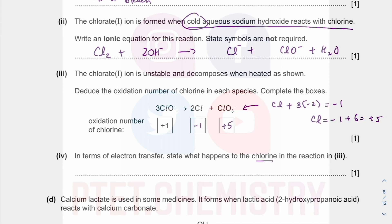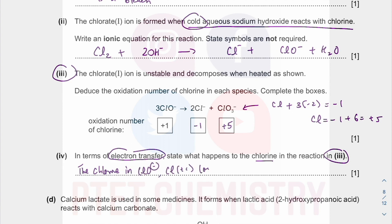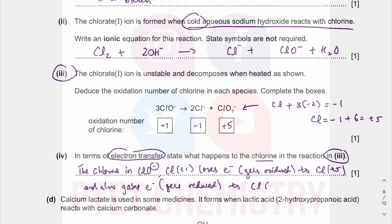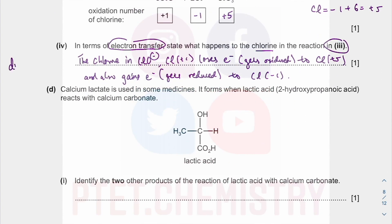So what happens to the chlorine in this reaction in terms of electron transfer? The chlorine in ClO⁻ at +1 loses electrons — that is, it gets oxidised — to chlorine +5. And also gains electrons — that is, it gets reduced — to chlorine −1. So what we say is it undergoes disproportionation, because it is both oxidised and reduced in the same reaction.